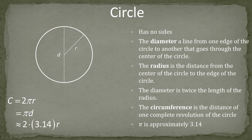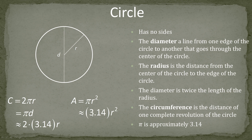Numerically, circumference looks like 2 times 3.14 times the radius. The area of the circle is pi times the radius squared — we find the radius, multiply it by itself, and then multiply by 3.14. That gives us approximately 3.14 times the radius squared.